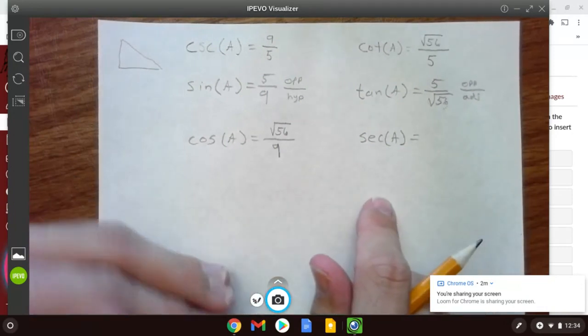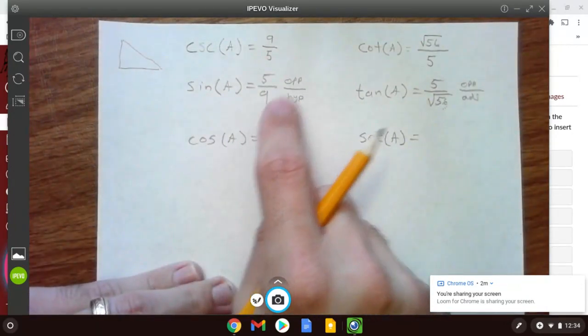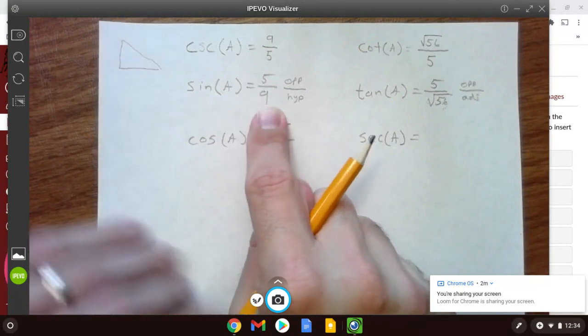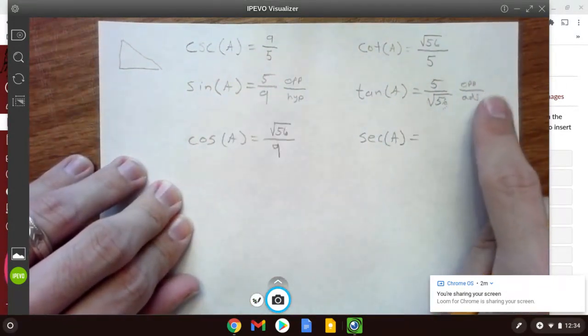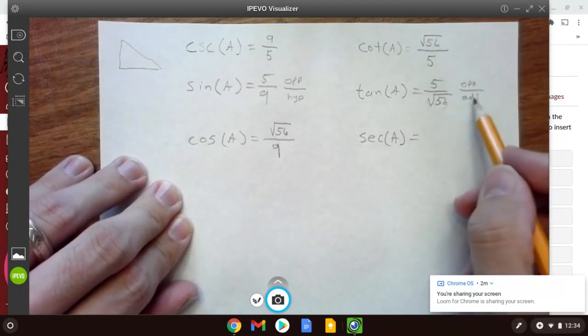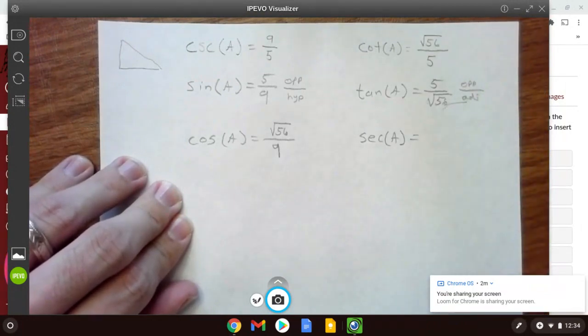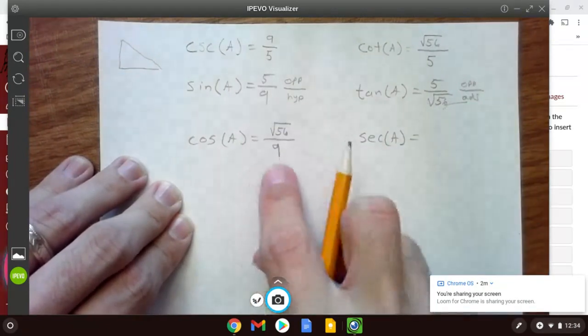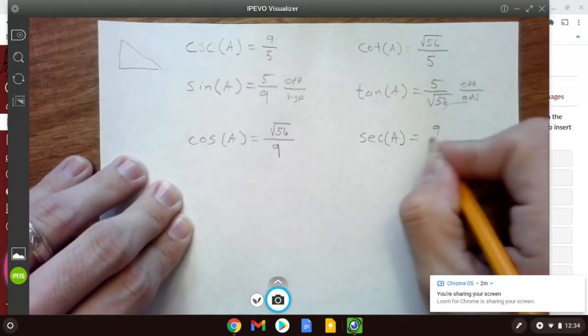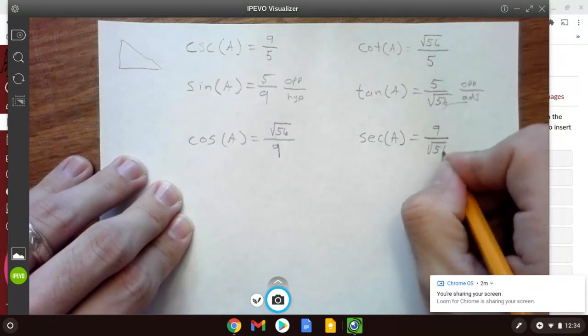All right, so hopefully you saw what I did there. I just thought of it as opposite over hypotenuse, because that's the definition of sine. And I thought about tangent as opposite over adjacent. So this tells me my adjacent is root 56. And then secant, that's just going to be the flip of this one. So 9 over root 56.